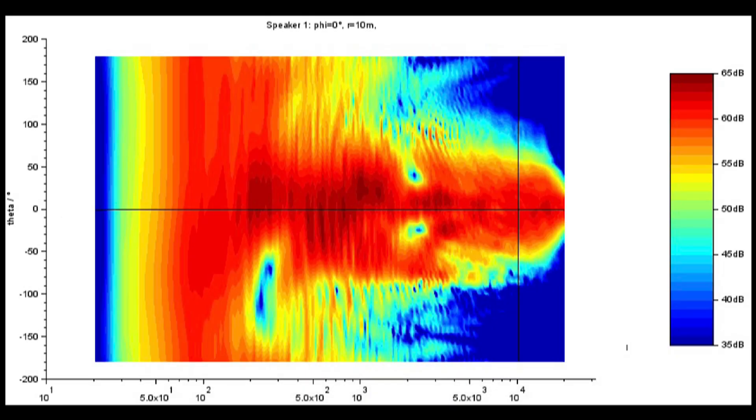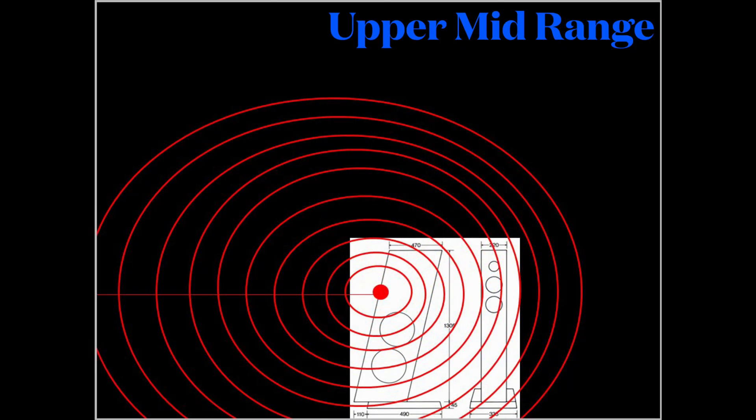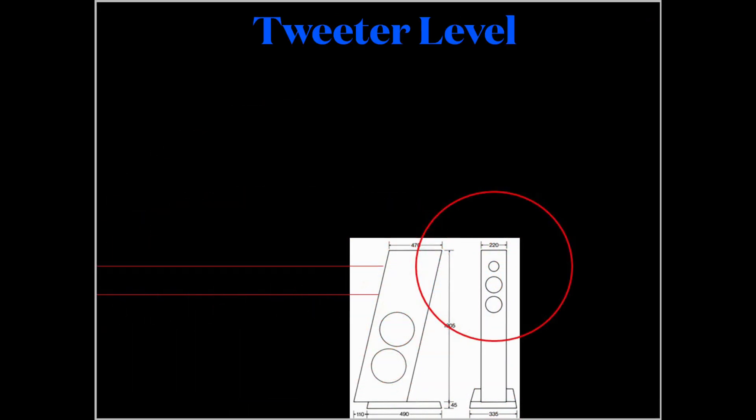Its treble or higher frequency range is gradually rolling down with different off-axis angles and well controlled. Similar effects also happen on the vertical off-axis.